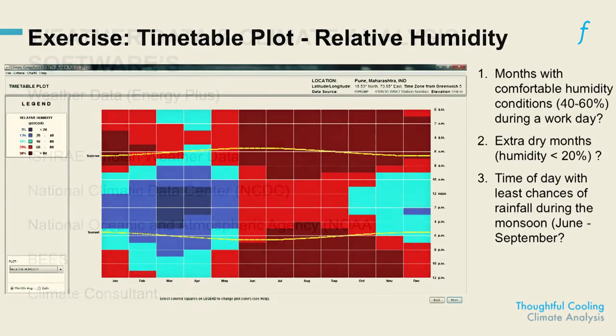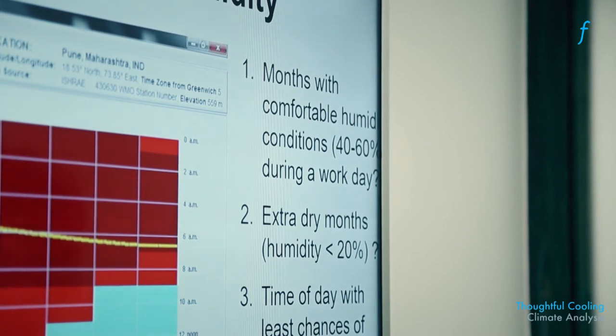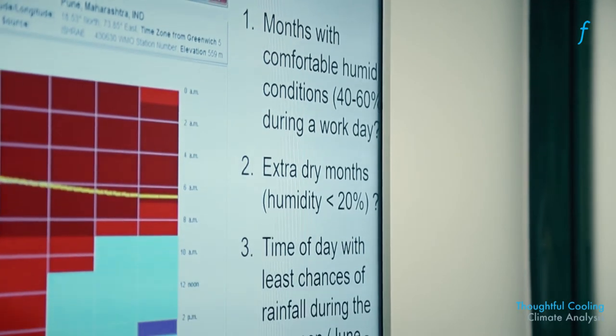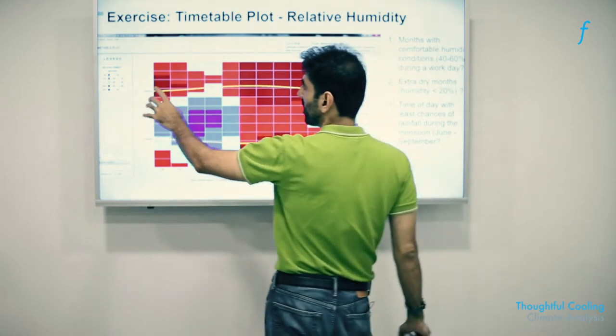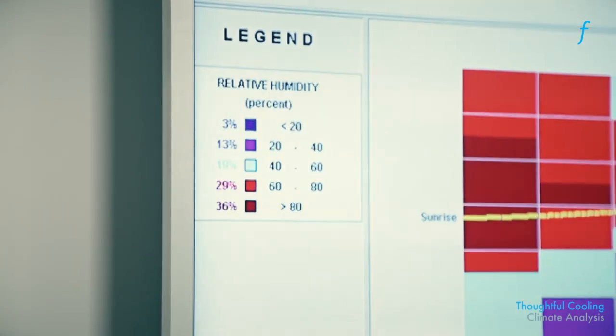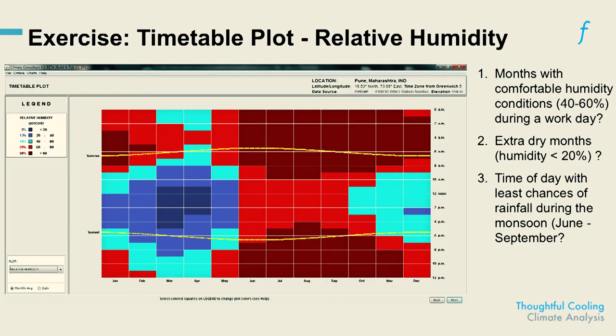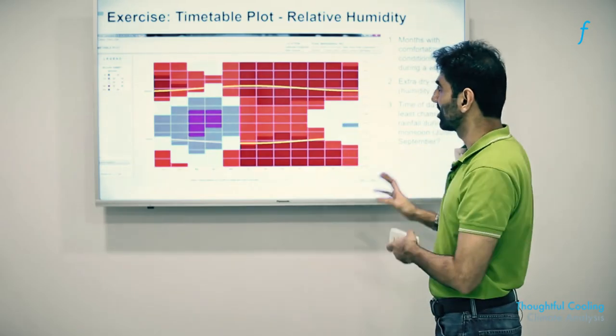These are some very quick outputs from the Climate Consultant software. Again, these are some of the questions you could use as part of an exercise, a classroom exercise using that tool which is available online. Here, for example, is the information about humidity levels in Pune. Depending on the color of the pixel, that indicates the relative humidity prevalent throughout the year from January to December, and in those months from midnight to 12 PM. This indicates whether the city is a relatively dry or a relatively wet city.